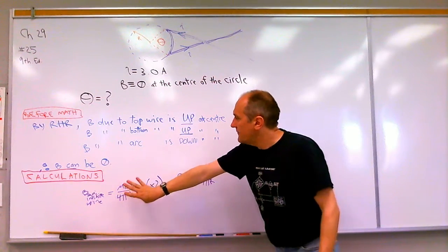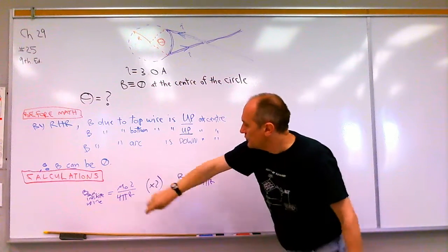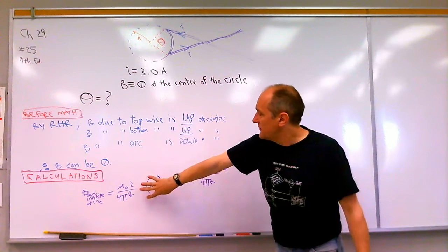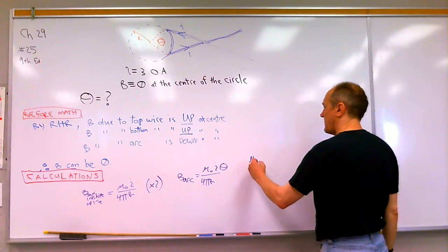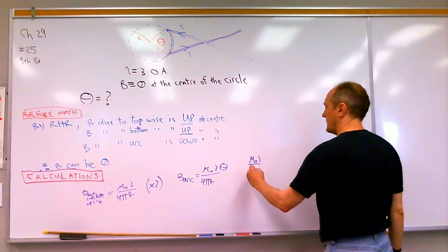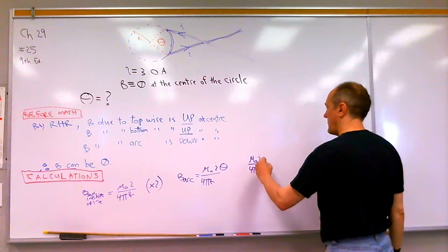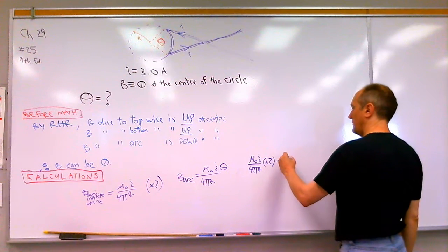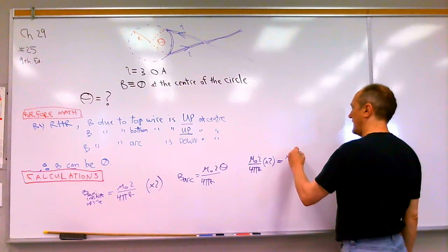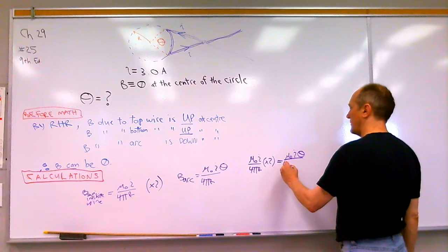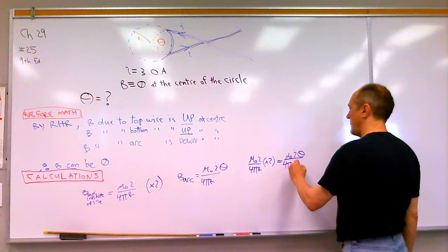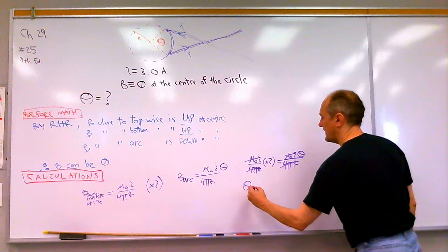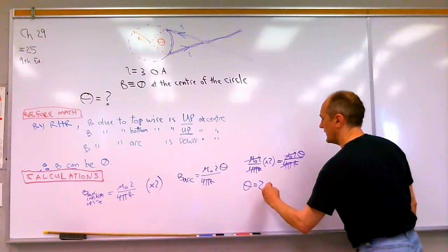So if we're going to have these two in one direction, and this in the opposite direction, and we want to get the field to zero, they have to cancel. So therefore, mu-naught i over 4 pi r times 2 equals mu-naught i theta over 4 pi r, most everything cancels, so we're left with theta equals 2 radians.